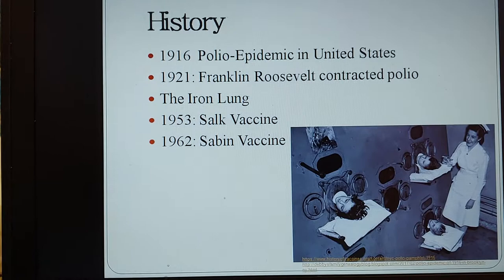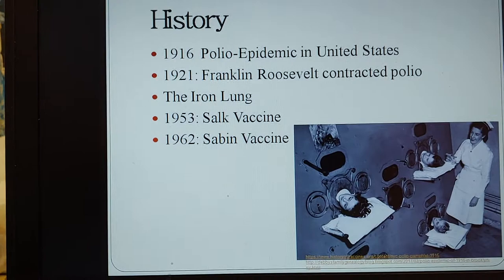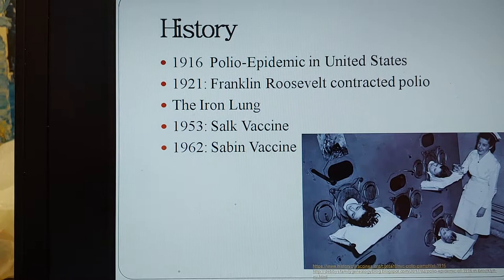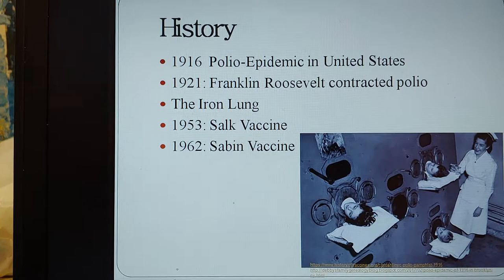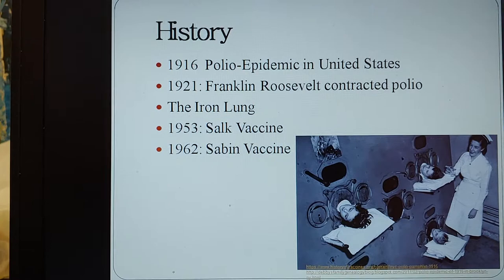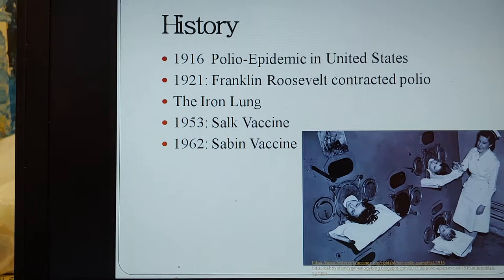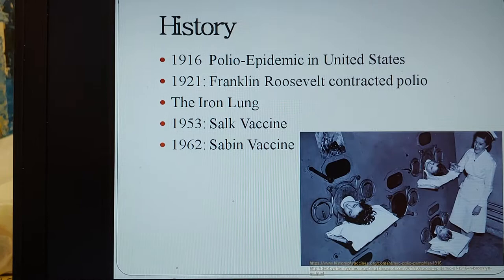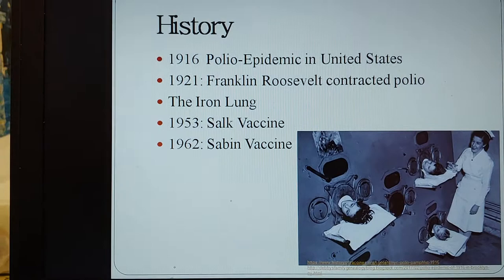In 1921, President Franklin Roosevelt actually contracted polio himself, which left him paralyzed. A well-known invention to come out of polio was the iron lung. This was created because doctors saw that patients were unable to breathe in the early stages of the infection, due to the virus paralyzing the muscles in the chest, which caused more deaths. So they created this respirator because it mimics the pumping action of the lungs in order to send oxygen to the body.